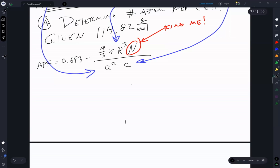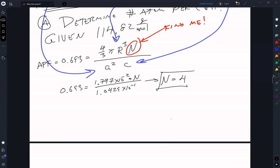We get 0.693 is equal to 1.797 times 10 to the minus 2 times n divided by 1.0429 times 10 to the minus 1. Which solving that gives us n is equal to 4.